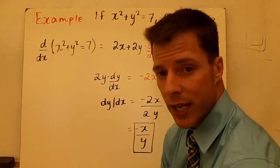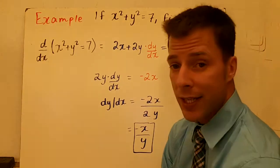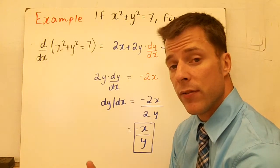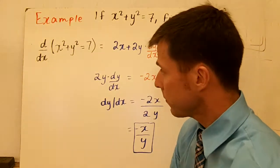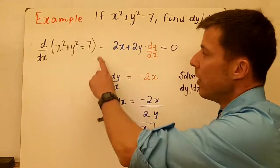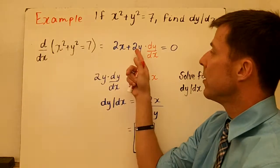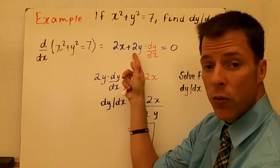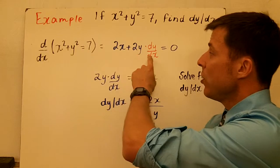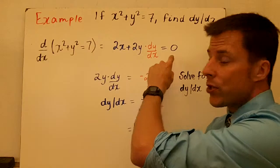We have two different variables on the same side. Now I could solve for y fairly easily, but then I would have a square root. So what I'm going to do is just take the derivative implicitly. The derivative of x squared is 2x. The derivative of y squared is 2y, and since you took the derivative of something that has a y in it, you have to multiply it by dy/dx. The derivative of a constant is 0.